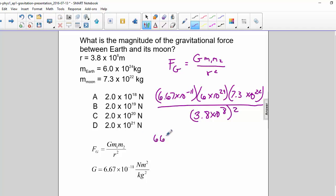We have 6.67 times 6 times 7.3 divided by 3.8 squared. And we also have 10 to the negative 11th, 10 to the 24th, and 10 to the 22nd, and 10 to the 8th squared.